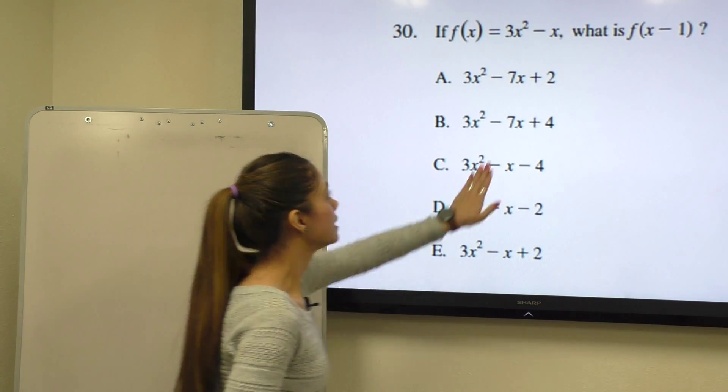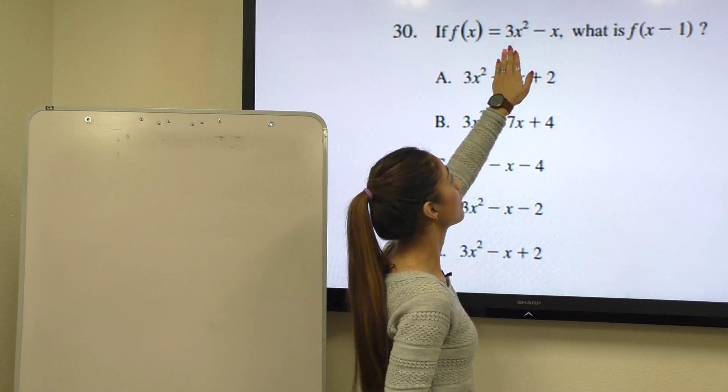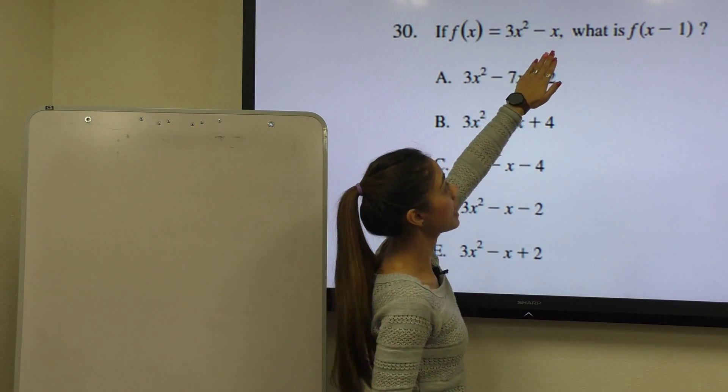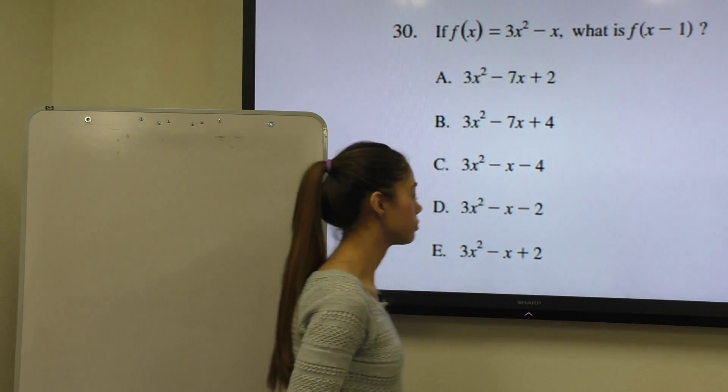So what they mean by this is that instead of having x, wherever we had x, which would be x squared and x, you would plug in x minus 1.